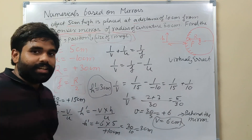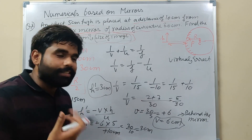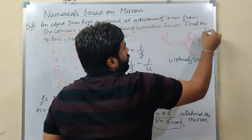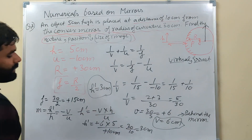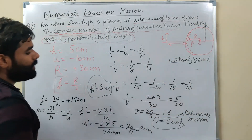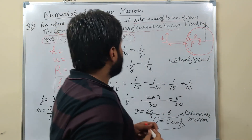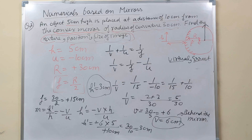h-dash = +3 cm (positive), which means the image is erect - same orientation as the object. Virtual image is always erect. So for this convex mirror numerical: nature = virtual and erect, position = 6 cm behind the mirror, size = 3 cm. Now you can solve any numerical from NCERT or refresher book. If any numerical is a problem, write it in the comment box, I will solve it for you. Thank you!